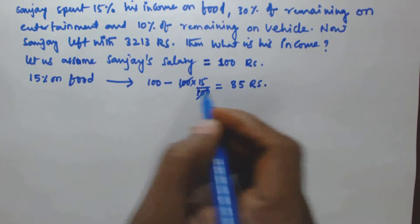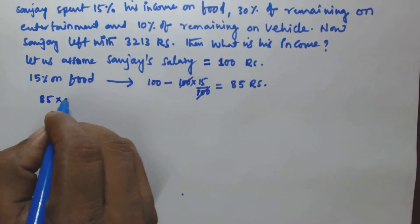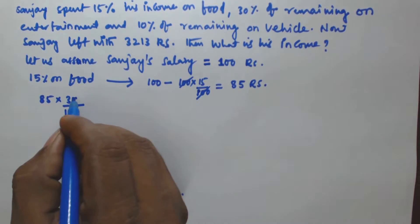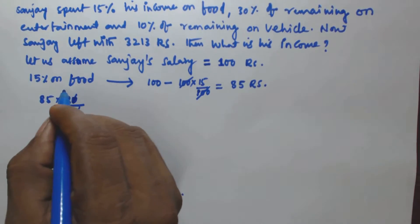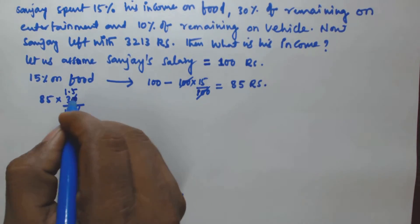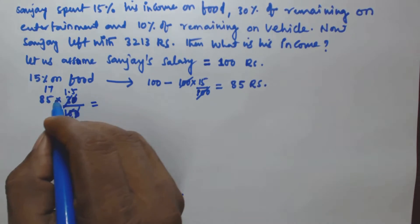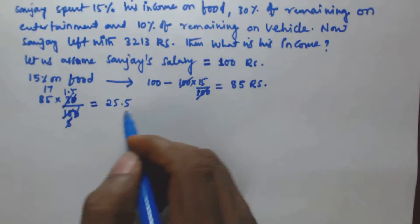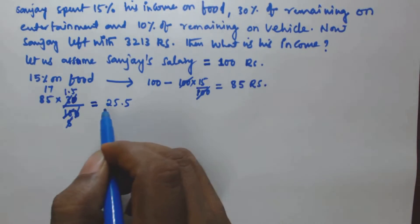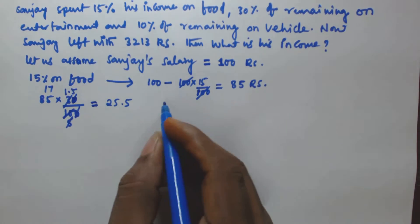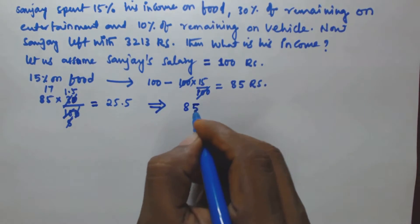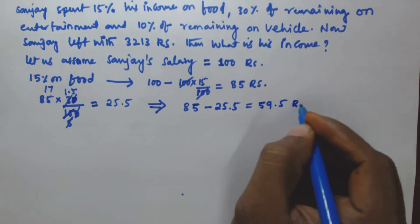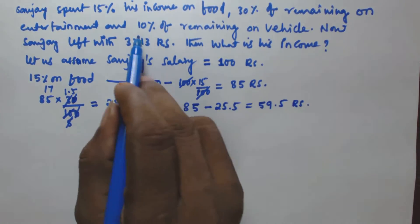Now 30% of remaining — that is 30% of ₹85 — he spent on entertainment. 30% of 85: simplifying, 17 into 1.5 gives 25.5. So out of ₹85, he spent ₹25.5 on entertainment. Now he will be left with 85 minus 25.5, which is equal to ₹59.5.